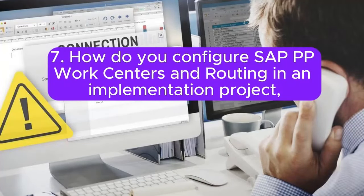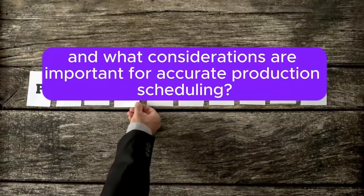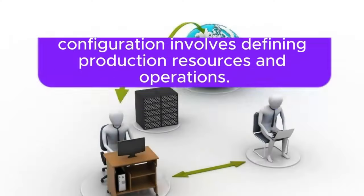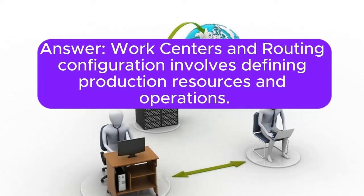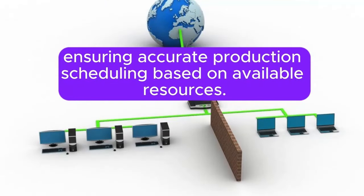Question 7: How do you configure SAP PP work centers and routing in an implementation project, and what considerations are important for accurate production scheduling? Work centers and routing configuration involves defining production resources and operations. Consultants use transactions like CR01/CR02 for work center creation and routing maintenance, ensuring accurate production scheduling based on available resources.